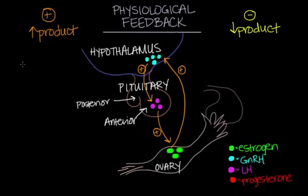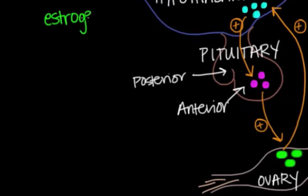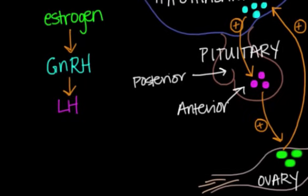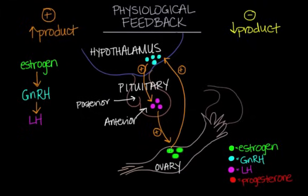So estrogen is produced, which triggers GnRH, and that works to trigger LH. GnRH and LH are going to be accumulating in our blood due to positive feedback. When high amounts of LH are produced in the blood, another hormone will wake up, and that hormone is called progesterone. Progesterone is triggered when it senses that LH levels are too high.